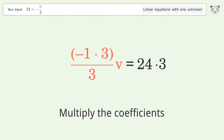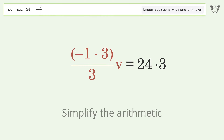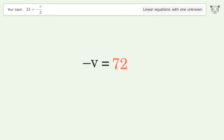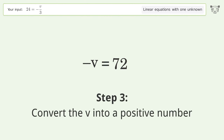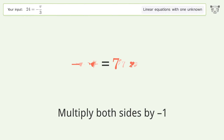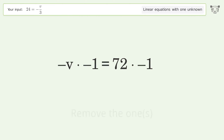Multiply the coefficients and simplify the arithmetic. Then convert v into a positive number by multiplying both sides by negative one.